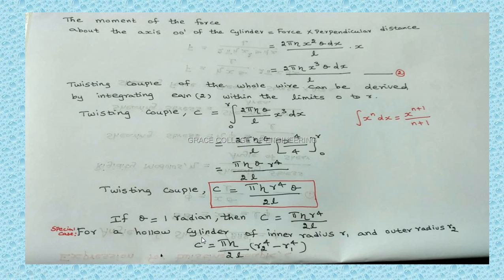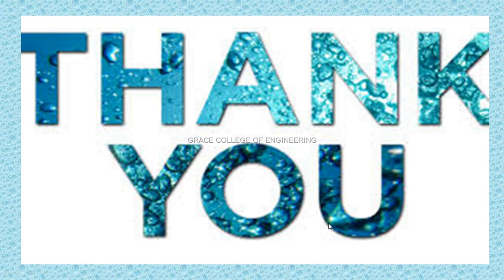For a hollow cylinder with inner radius r1 and outer radius r2, the formula changes: C equals pi eta by 2L times (r2 to the power 4 minus r1 to the power 4). This is the couple per unit twist of the wire. Thank you.